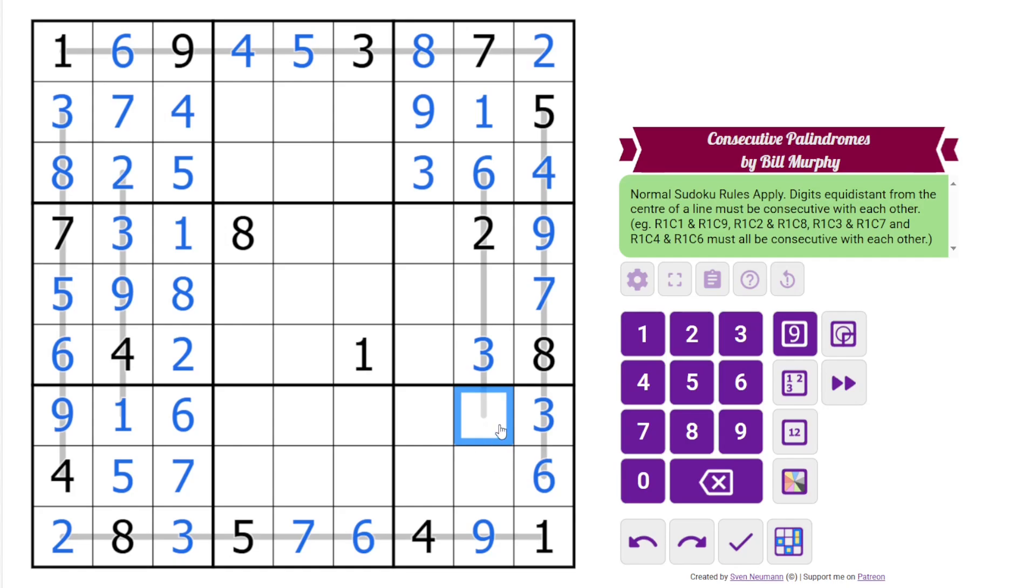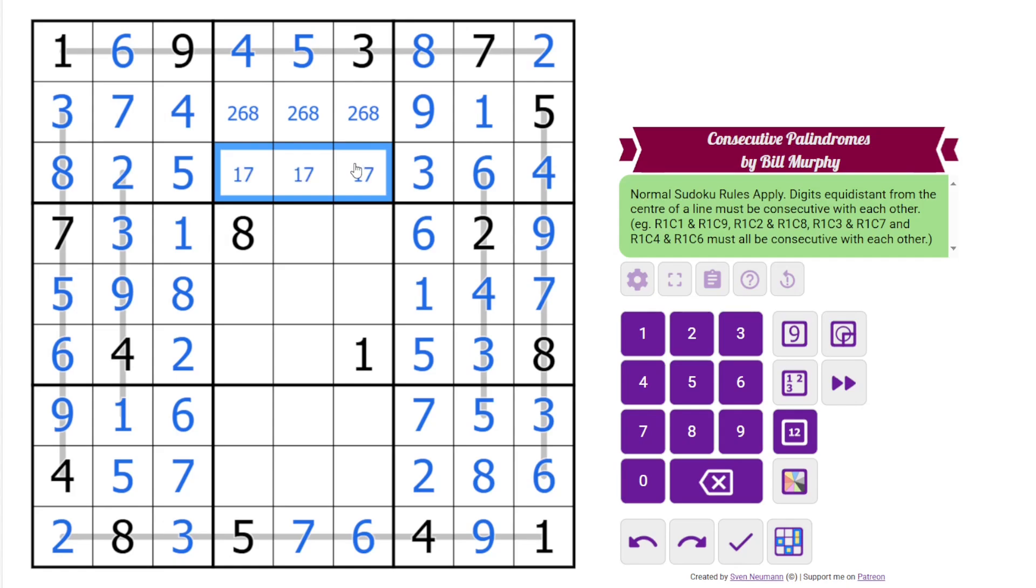This could be 5 or 7 right now. In fact, 5 and 7 are going to have to go in these cells somewhere, but there's a 7 here. And then these are 2, 8. Wait for the order. There's a 4. 1, 5, 6. Across here we have 2, 6, and 8. And 1, 7, 9.